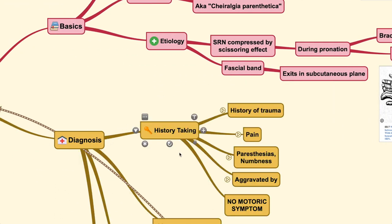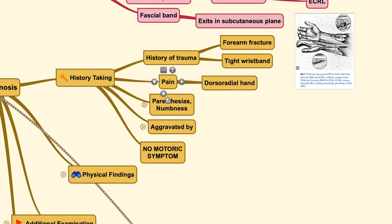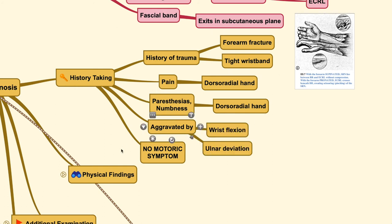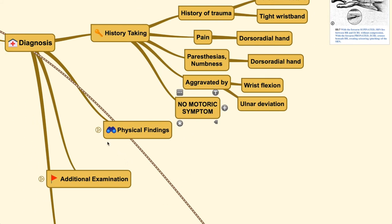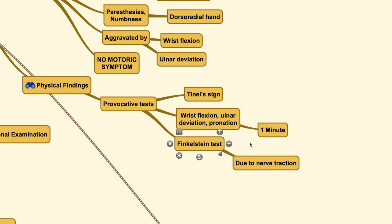For the diagnosis of this condition, you could find a history of trauma such as forearm fracture, or the patient could be using a tight wristband. The pain is generally located at the dorsal radial hand, and there can be paresthesia and numbness, as expected because the nerve carries sensory information. It is usually aggravated by ulnar deviation and wrist flexion, with no motor symptoms at all. Physical findings for provocative tests involve wrist flexion, ulnar deviation, and pronation — this causes the highest tension on the sensory branch of the radial nerve, and you can hold it for up to one minute to elicit any symptoms.